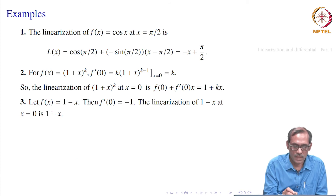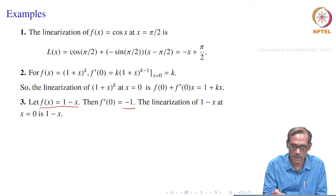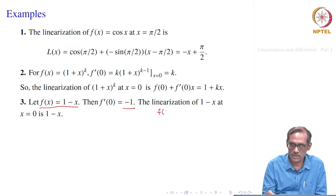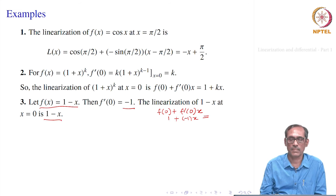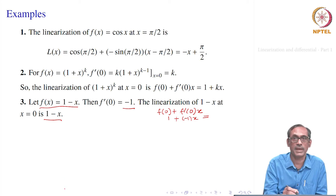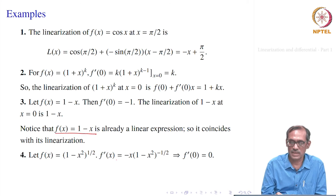Let us take the third example: f of x equal to 1 minus x. Then f prime of 0 is minus 1, and the linearization at x equal to 0 is f of 0 plus f prime of 0 times x minus 0, which is 1 plus minus 1 times x, giving 1 minus x. So the linearization of 1 minus x is 1 minus x itself. The reason is that f of x equal to 1 minus x is already a linear expression, so it coincides with its linearization, as it should.